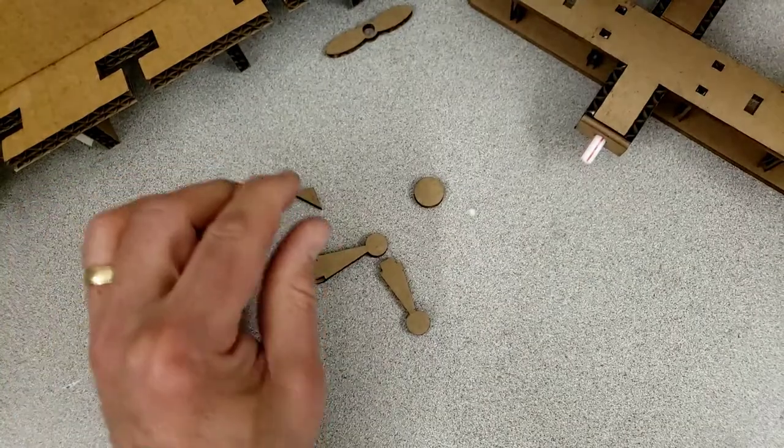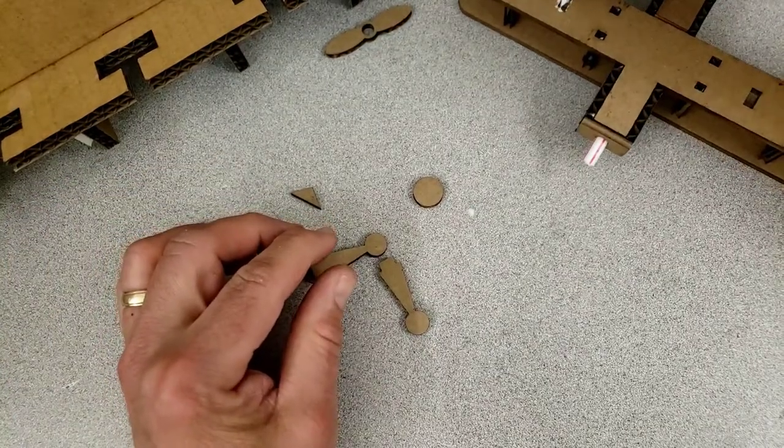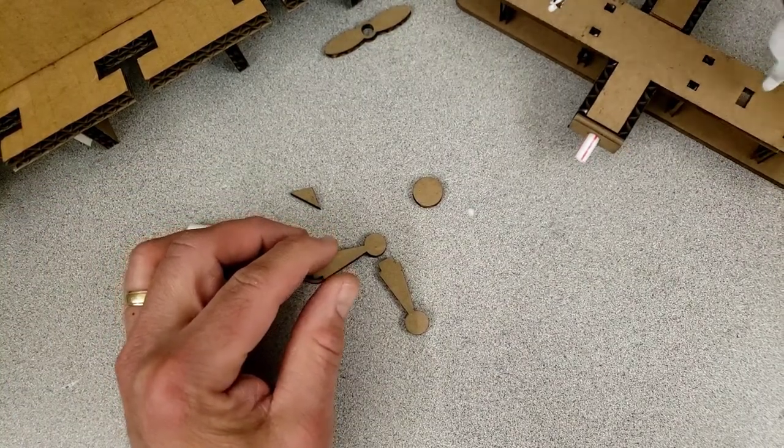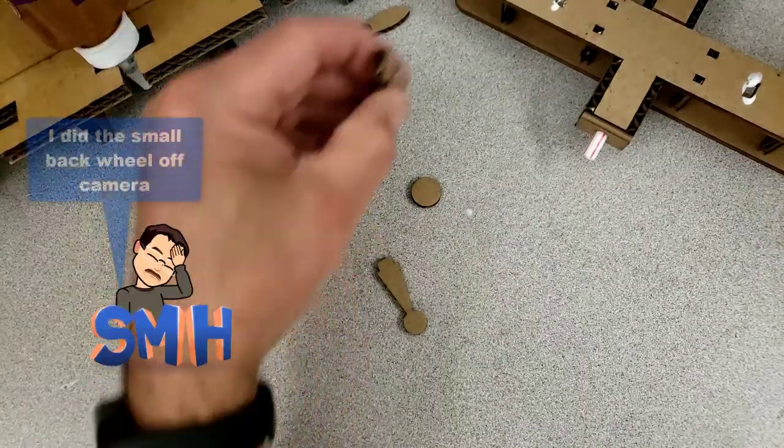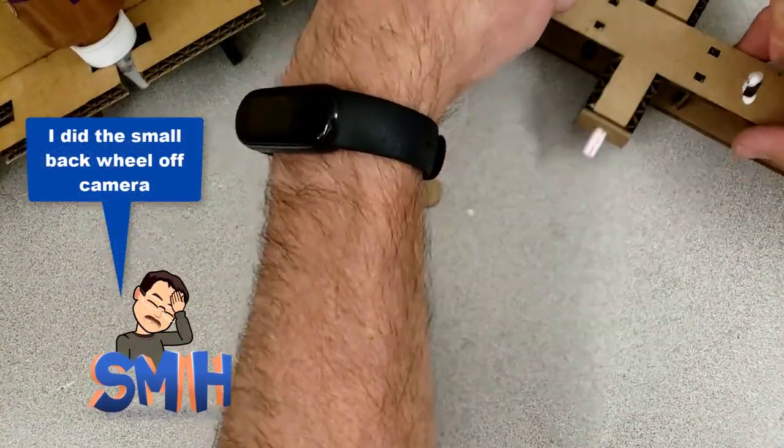All righty friends, and now let's wrap it up by gluing in both of our front wheels. Just put a little bit of glue in there, of course cap it, leave it upside down, and pop, pop.